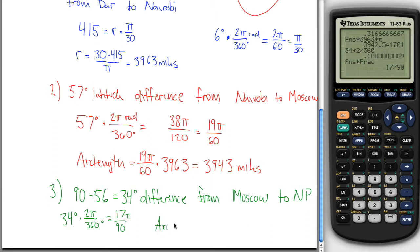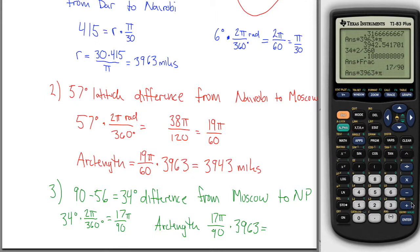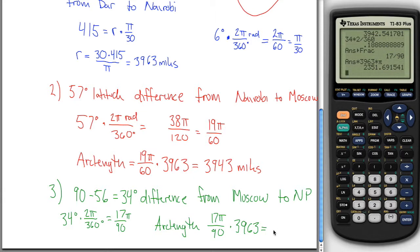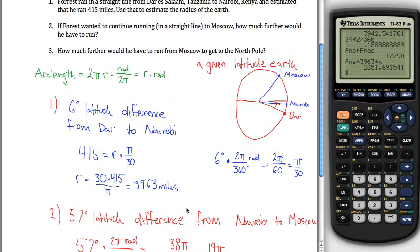So the arc length is 17 pi over 90 times the radius of the earth, which was 3963, which we can figure out is our answer times 3963 times pi, and we get 2,352 miles. So, if you're going to run from Moscow to the North Pole, you go 2,352 miles if you go in a straight line around the outside of a perfectly spherical earth. That's the end of this perfect problem.